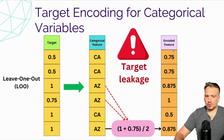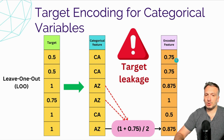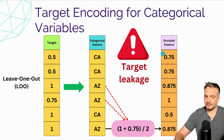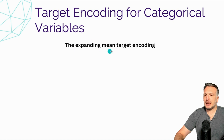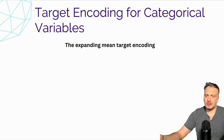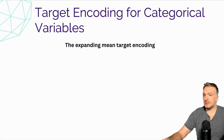In practice, this is not true. We observe that performing this leave-one-out encoding still results in high data leakage and overfitting on training data, because we are using information that is not available when predicting on unseen data. The technique introduced in CatBoost is called Expanding Mean Target Encoding — a way to use target encoding similar to leave-one-out, but designed to limit the impact of data leakage.